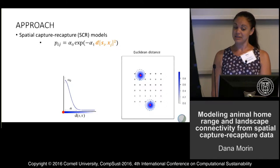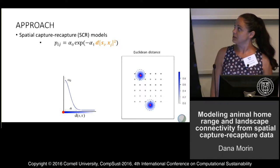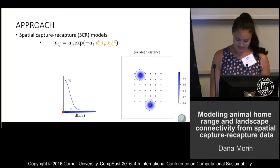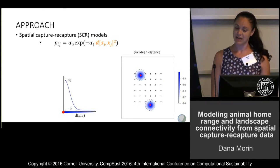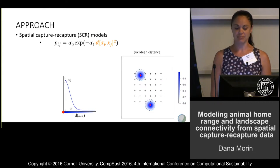This is the Euclidean distance model. What we're focused on here is that orange highlighted part of the equation — the distance between si, the activity center, and trap j.